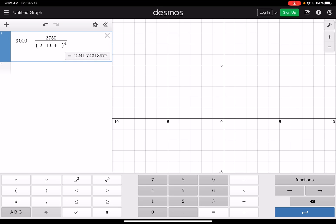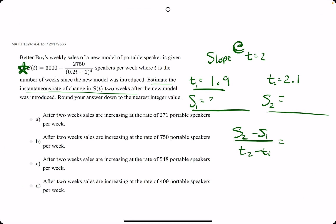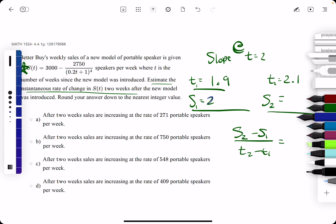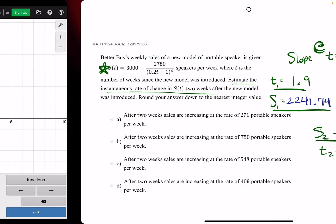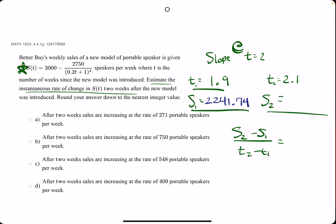So we get 2241.74. I'm going to use a different color. 2241.74. Double check. 2241. Alright.